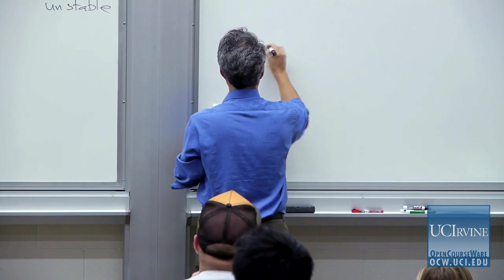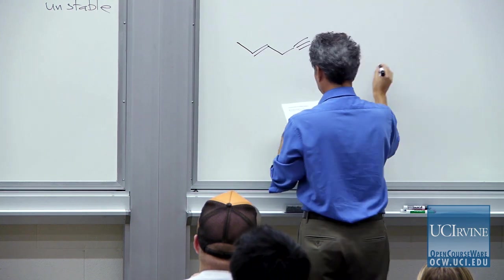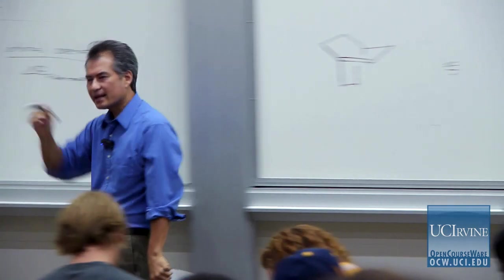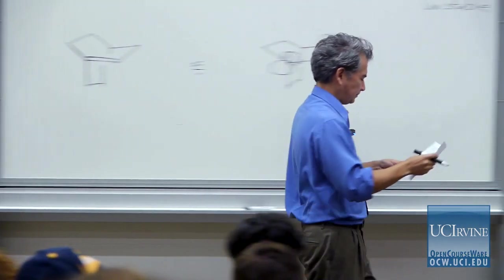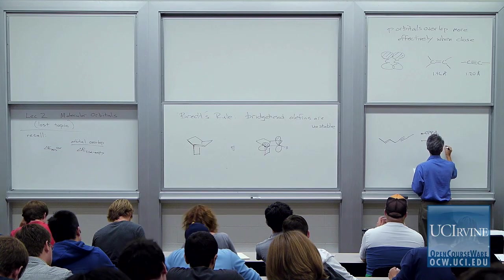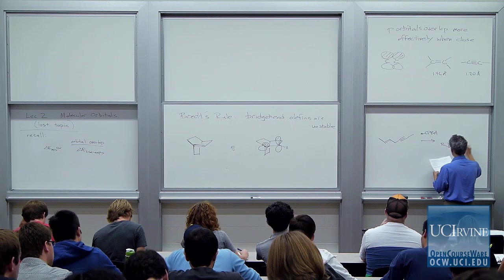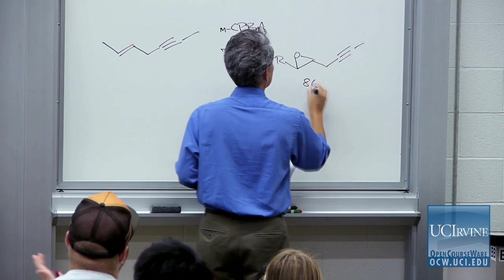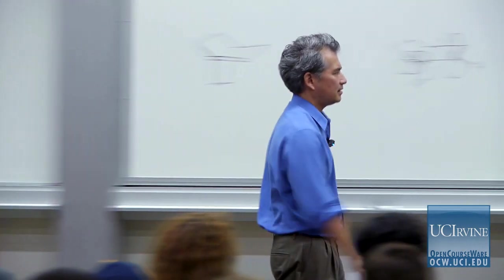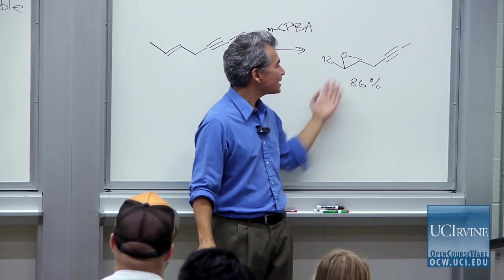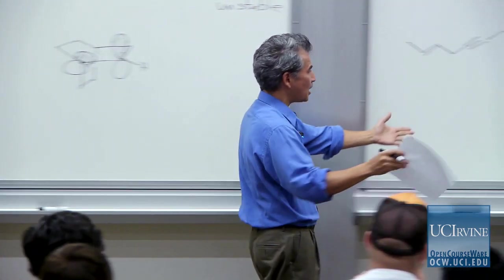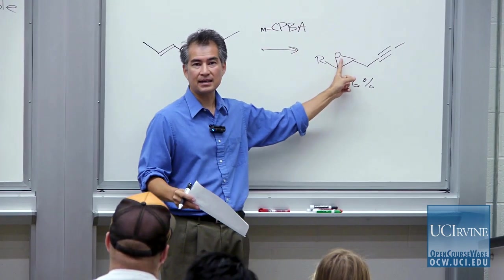Let's take an example. I'll take a simple substrate molecule and imagine treating it with an epoxidizing agent — meta-chloroperoxybenzoic acid. Peroxy acids make epoxides. There are two different pi systems you could epoxidize. The major product of this reaction results from attack on the alkene.